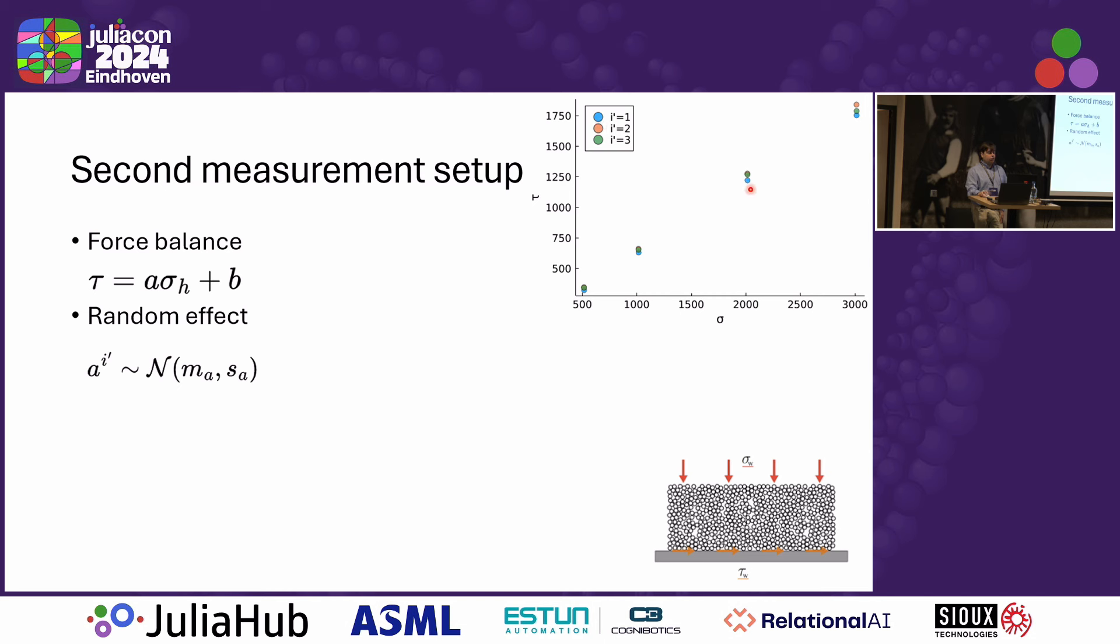For example, in the first repetition, those are the dots in blue. Those dots are always at the bottom of each of these three points. Then for the second repetition, the measurements in orange, those are always at the top of each of these three measurements. So there is definitely some additional structure present in the data, which means that it is likely a good idea to introduce a random effect into the model.